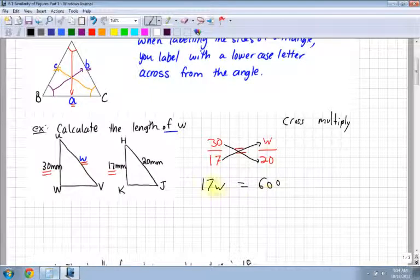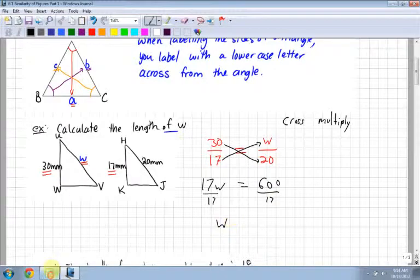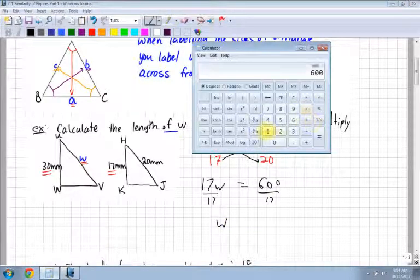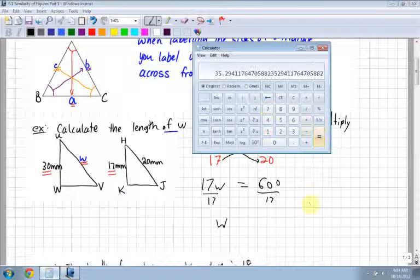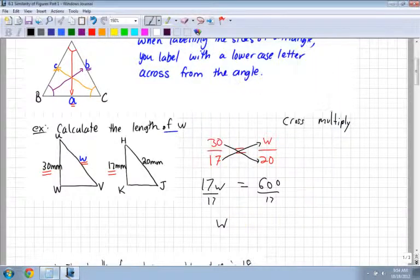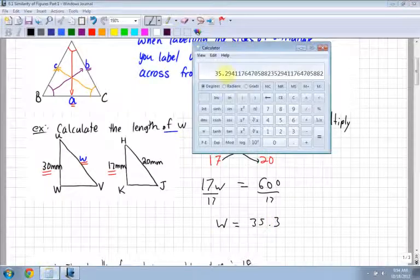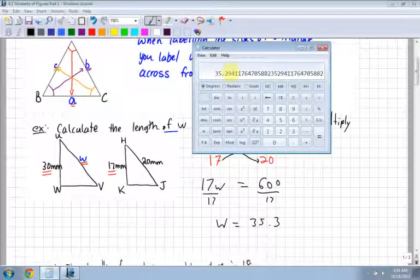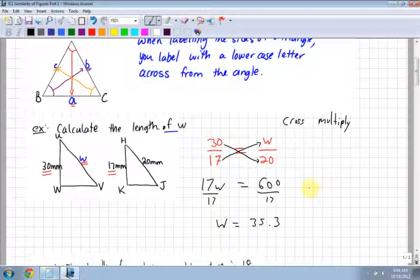Then notice I divide by the value that's in front of W. I divide by the value in front of my letter, so I divide by 17. I get 600 divided by 17, which equals 35.3. Notice I rounded the 2 to a 3 because the 9 is bigger than 5.